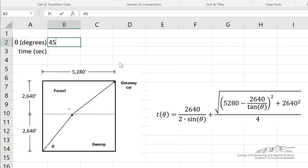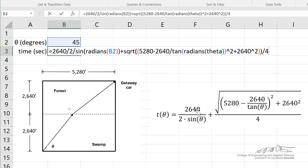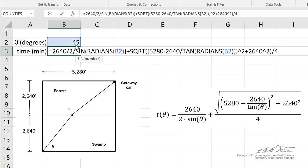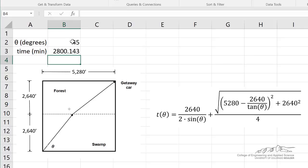So I've set up my spreadsheet here. Solver needs an initial guess, so I'm just going to choose something between 30 and 90 degrees, a nice round number of 45. And now I can use this equation here to calculate the time in seconds that it's going to take to get to the getaway car. So I've got my guess of 45 degrees. I've set my equation here. I press enter. So if you go at an angle of 45 degrees, it's going to take you 2800 seconds. Let me quickly convert this to minutes by dividing by 60.